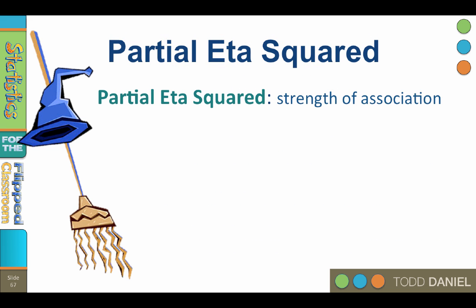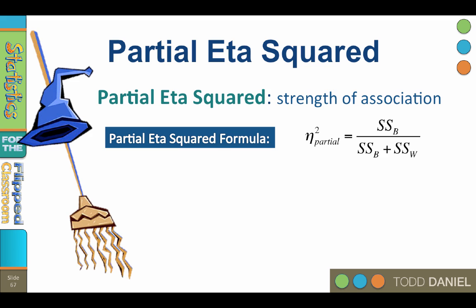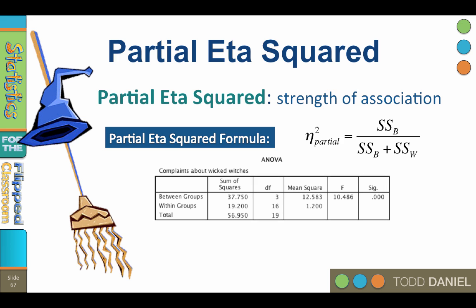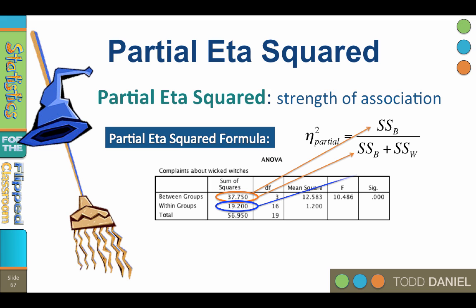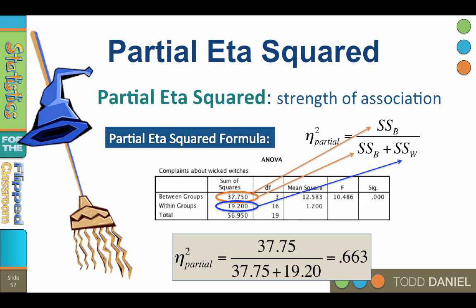To calculate the partial eta squared strength of association, we need a formula. All of the elements can be gleaned from the ANOVA summary table. We begin with the sum of squares between, which plugs in two places in the formula, then add the sum of squares within. For the Wizard of Oz example, this would be 37.75 divided by the sum of 37.75 plus 19.20, which equals .663.